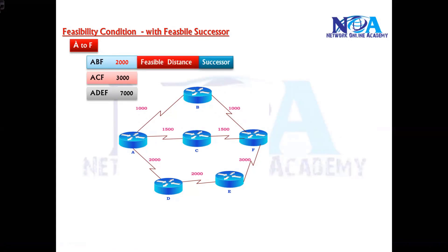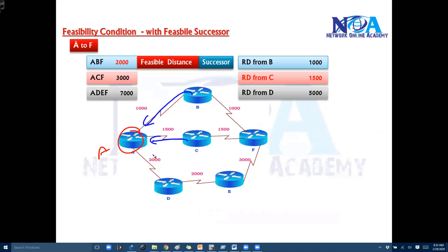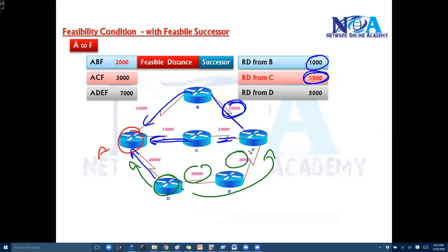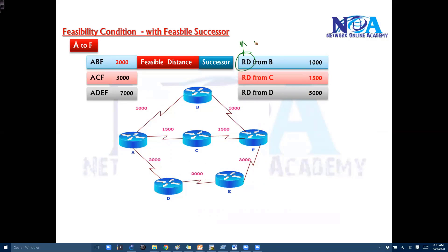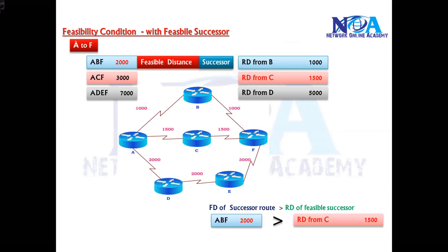Whichever has the least metric we call the successor route. In this case, the route via B is your successor route. The reporting distances are what router A learns from its neighbors. The reporting distance from B is 1000, from C it is 1500, and from D it is 5000. The reporting distance is simply the neighbor's best route to reach that particular destination — in this example, F.